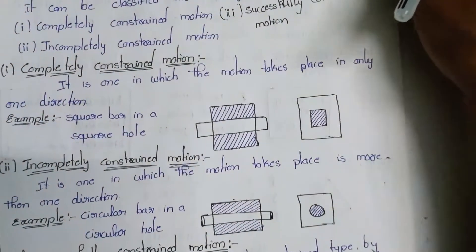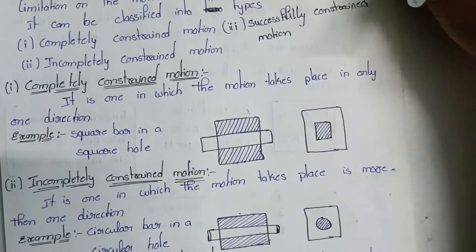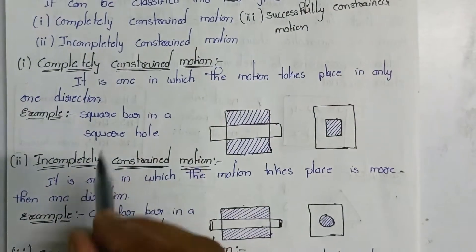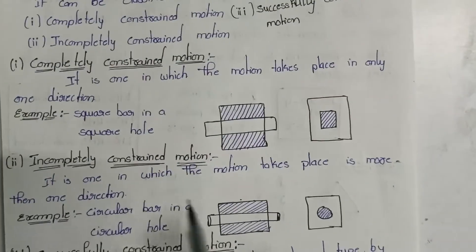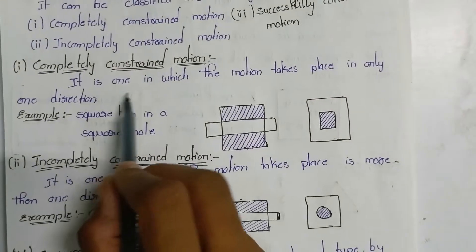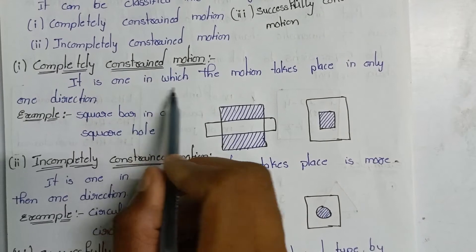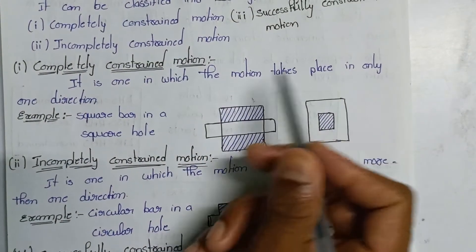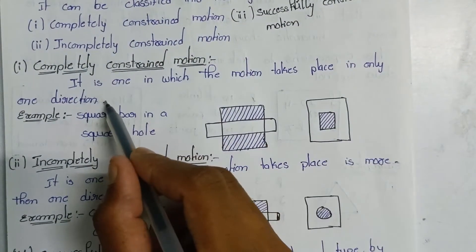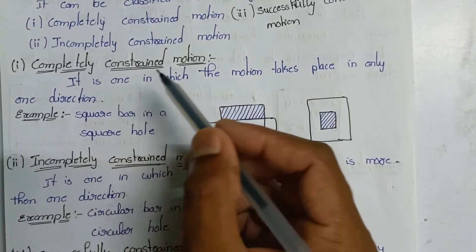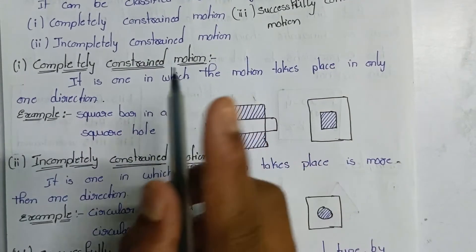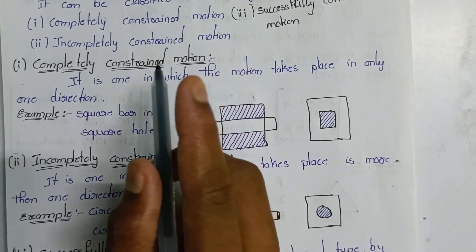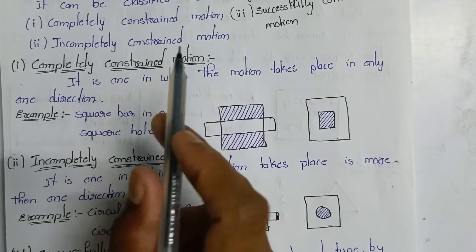Completely constrained motion is one in which motion takes place in only one direction — only one direction of motion is possible.